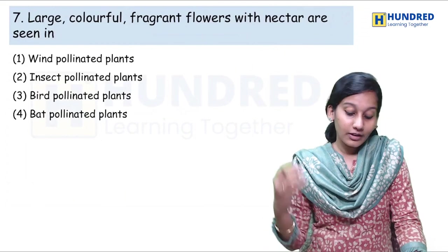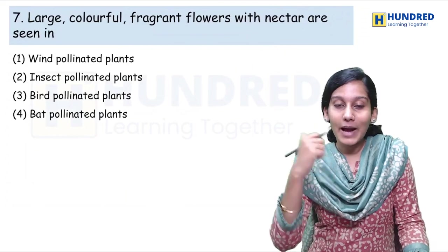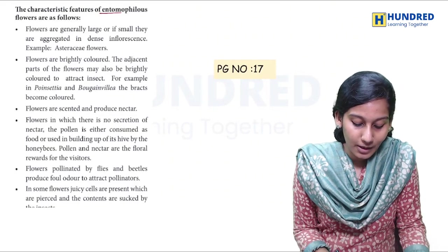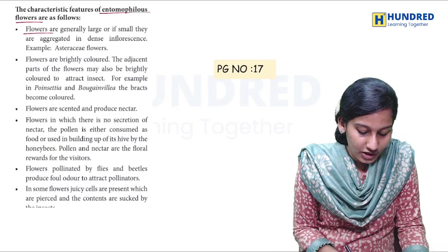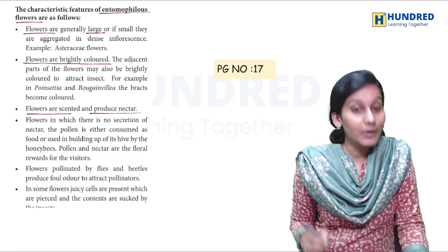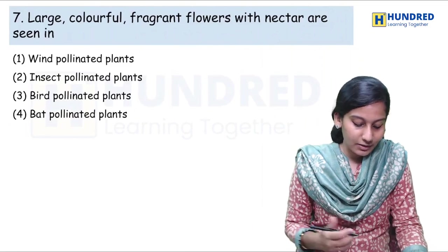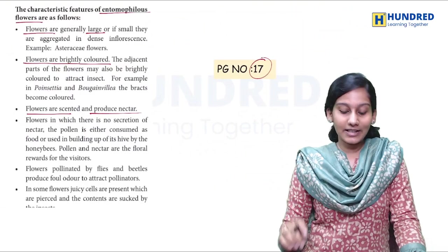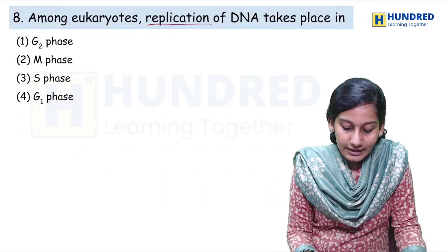Next question: large, colorful, and fragrant flowers with nectar are seen in — wind pollinated, insect pollinated, bird pollinated, or bat pollinated? In the book, in the entomophilous flowers — pollination by insects, called entomophily — such flowers are generally large, brightly colored, scented, and they produce nectar. The same sentences are given here — large, colorful, and fragrant with nectar — which is basically the insect pollinated flowers, on page number 17.